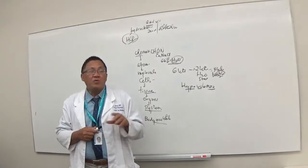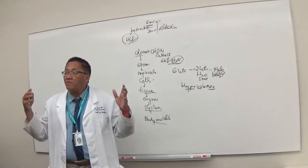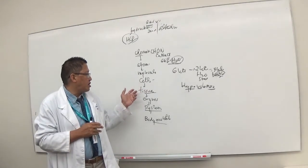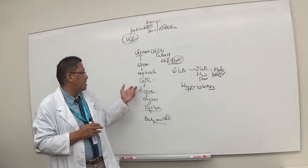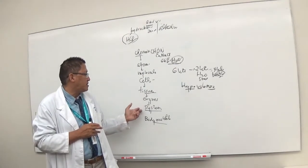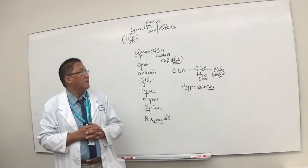Now when it comes to cells, we know that we are made up of billions of cells. And tissues are formed by cells, and tissues when they group together, they form organs, and organs form organ systems and body as a whole.